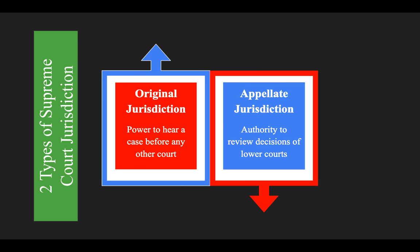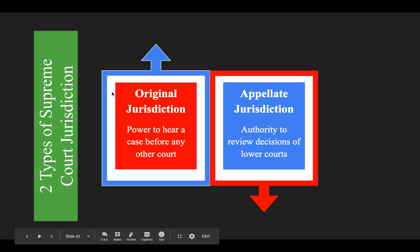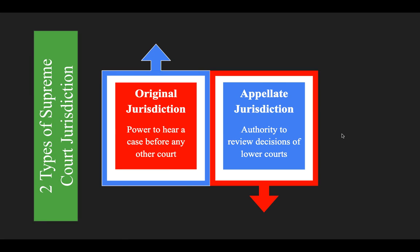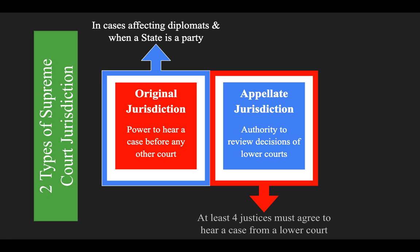The Supreme Court has special significance in the federal judiciary. Federal courts have either original jurisdiction, which is the power to hear a case before any other court, or appellate jurisdiction, which is the authority to hear decisions of lower courts. The Supreme Court actually has both original and appellate jurisdiction. The court has original jurisdiction in cases affecting diplomats and those in which a state is a party. The court uses its appellate jurisdiction when at least four justices agree to hear a case from one of the lower courts — called the Rule of Four — and they'll issue what's called a writ of certiorari, which is an order by a higher court directing the lower court to send up all of the legal documents in a given case so that they can review it.